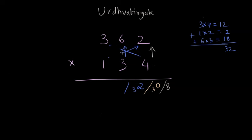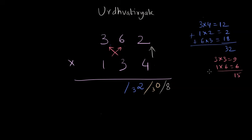After completing the Urdhva Thiryak mix of vertical and cross multiplications, we go for the cross multiplication of three digits on the left hand side. Three times three is nine and one times six is six, giving an addition of 15. So we write five and a small one as carry. Then we do the vertical multiplication on the left hand side, which gives us three, and our result is almost ready — we just need to take care of the carries.